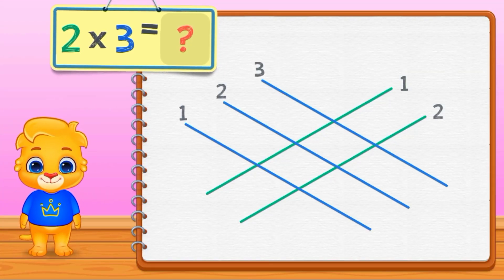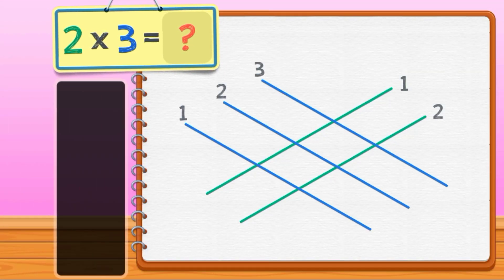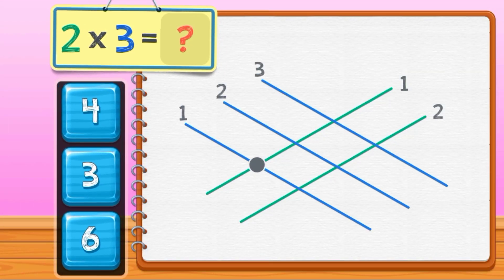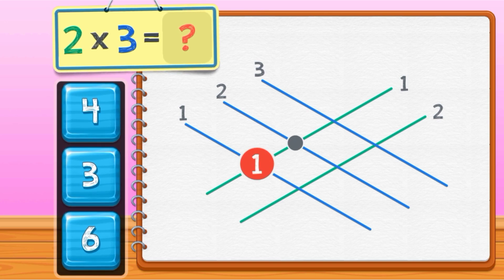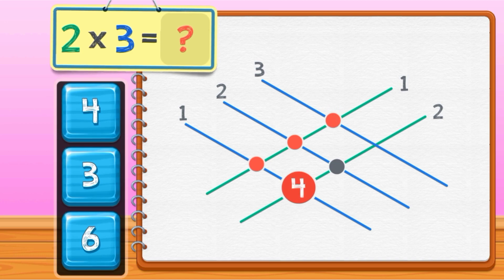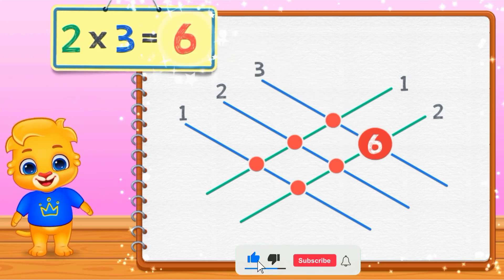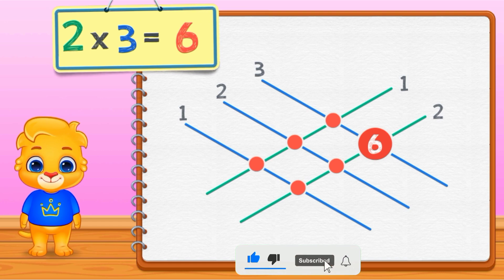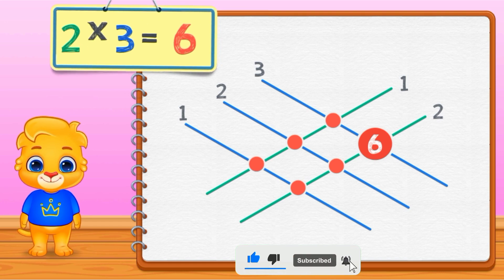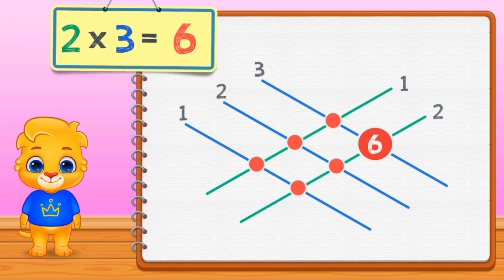3 equals 1, 2, 3, 4, 5, 6. 2 times 3 equals 6.